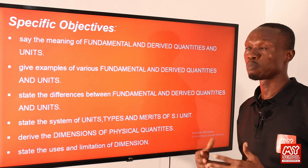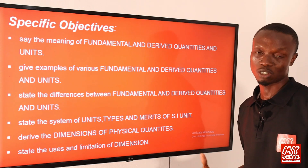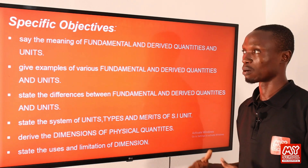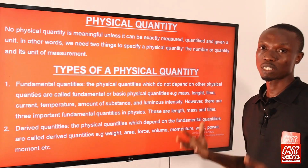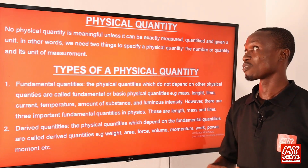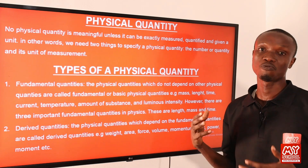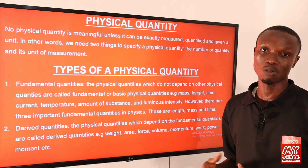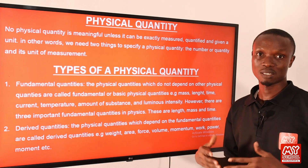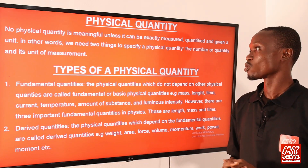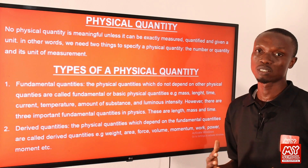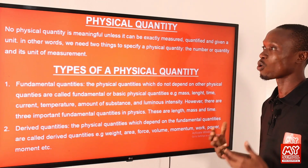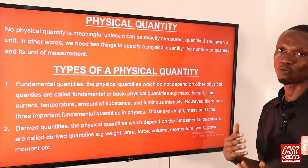And lastly, we should be able to state the uses and limitation of dimension. So let's move over to the next slide to begin our lesson. Basically, we are going to be looking at the meaning of physical quantity. So by physical quantity in physics, we are referring to a property of a material or a system that can be quantified by measurement.